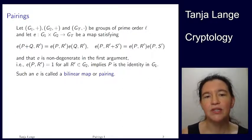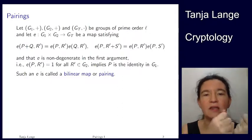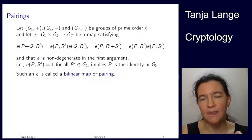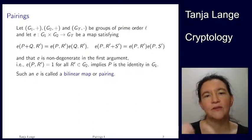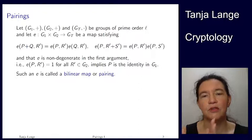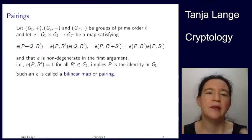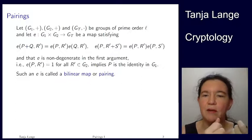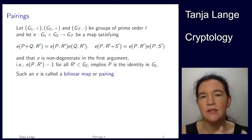In a pairing, or what is a pairing to begin with, a pairing is a map which is linear in two arguments. We're having two input groups, G1 and G2, and we're having a target group GT. It's customary to write the first two groups as additive groups because those are going to be point groups of an elliptic curve. And then the target group we're writing multiplicatively, because it's a subgroup of the multiplicative group of a finite field.